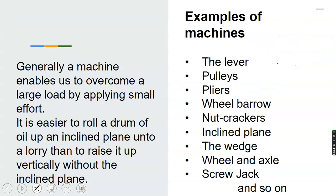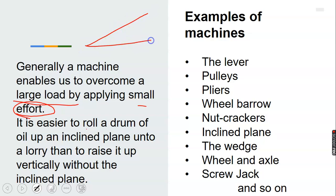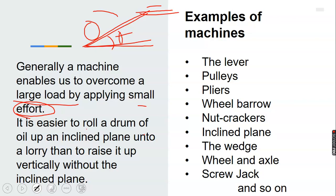Generally, a machine enables us to overcome a large load by applying small effort. For instance, it is easier to roll a drum of oil up an inclined plane onto a lorry than to raise it vertically without the inclined plane. Rolling it along the plane is much easier than lifting it straight up.